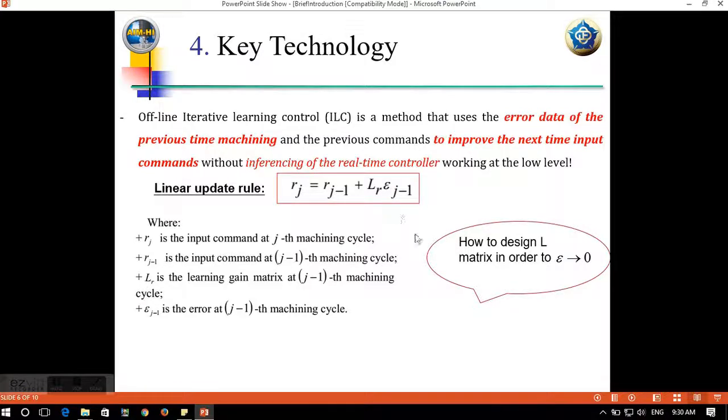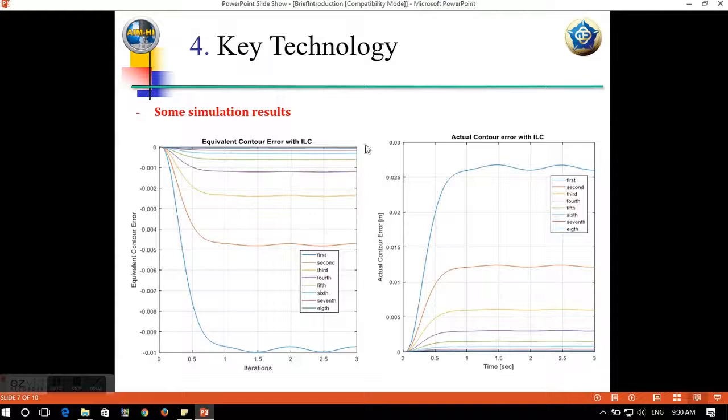So the key is the offline learning update rule. And the key point is how to design the learning matrix in order to make the equivalent contour errors gradually decay to zero.